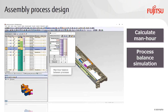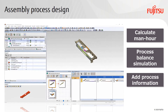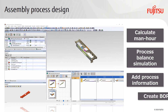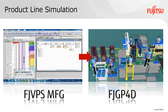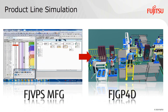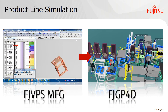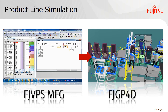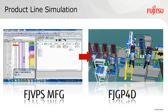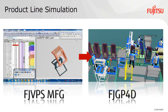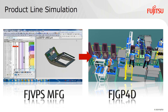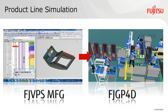It is also possible to display and check process information such as the total operation time of each process, equipment used, and a list of parts used. The operating procedure and process information verified by FJVPSMFG can be used for manufacturing line layout simulation by passing it to FJGP4D. It is possible to improve the walking route of workers and the layout of equipment in a three-dimensional space.